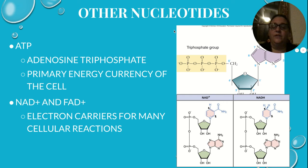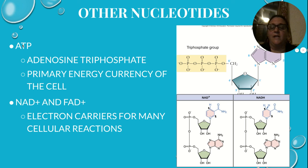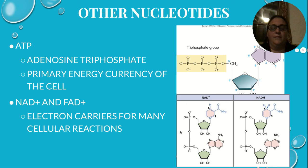There are some other kinds of nucleotides that don't come together to make up polymers. One is called ATP — you may have heard that it is the energy currency of the cell — and that's adenosine triphosphate: an adenine, a sugar, and three phosphate groups attached to it, which makes it different from a regular nucleotide with just one phosphate group. We also have NAD+ and FAD+, which will come into play when we start talking about photosynthesis and respiration, and NADH, which is just the recycled version. These are electron carriers for reactions like cellular respiration and photosynthesis, and we'll get back to those.